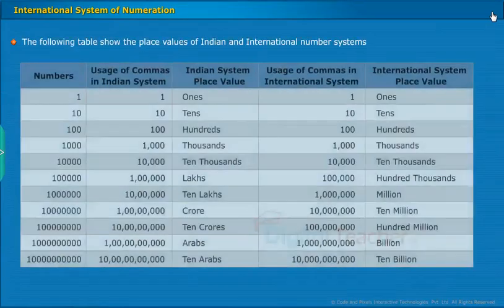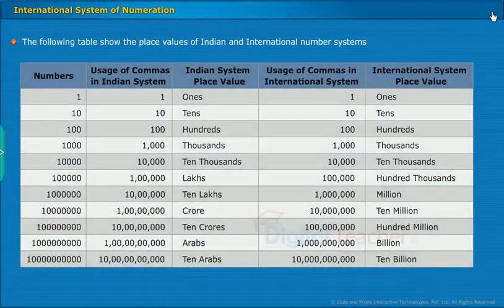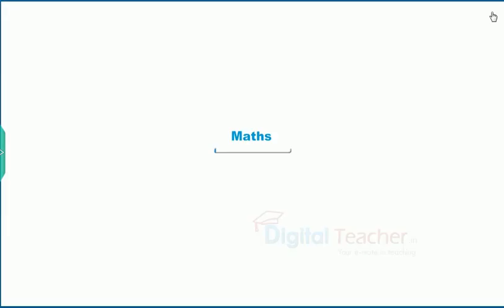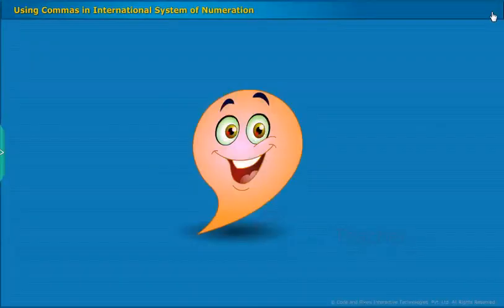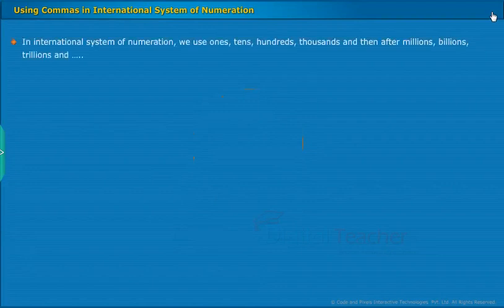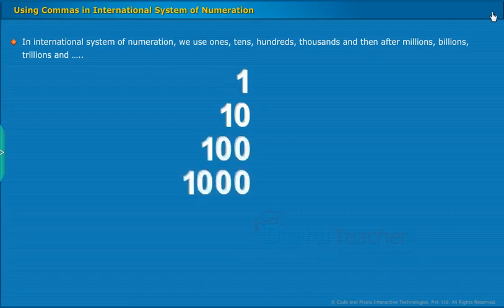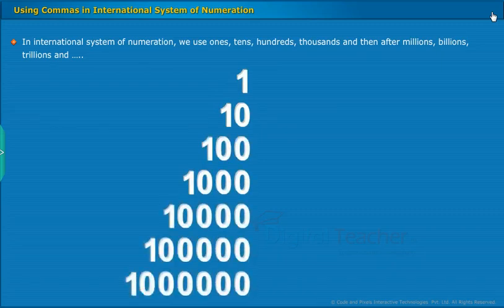The following table shows the place values of Indian and international number systems. Now, let us see the international system of numeration of using commas. In international system of numeration, we use ones, tens, hundreds, thousands, and then after millions, billions, trillions, and so on.